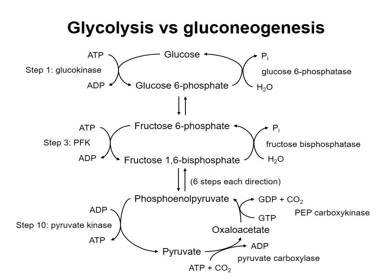This diagram shows that gluconeogenesis is not simply glycolysis in reverse. The reactions of glycolysis go from top to bottom, and the reactions of gluconeogenesis go from the bottom to the top. The enzymes that catalyze the three irreversible steps of glycolysis are on the left, and at the corresponding steps of gluconeogenesis, we need different enzymes to catalyze different reactions that are energetically favorable. In particular, note that the first two steps of gluconeogenesis require energy input to accomplish the conversion of pyruvate to phosphoenolpyruvate.